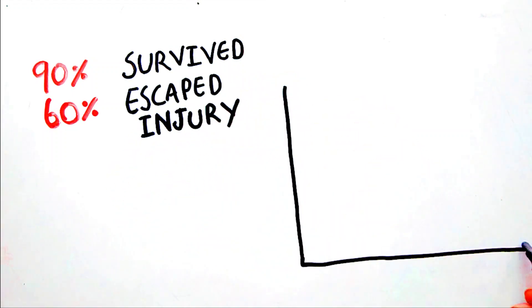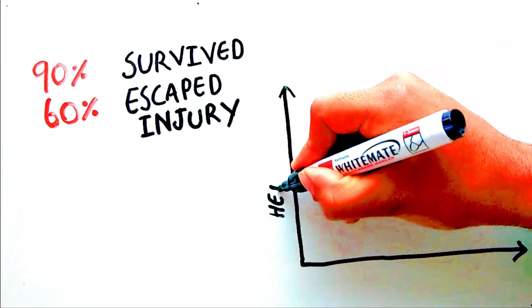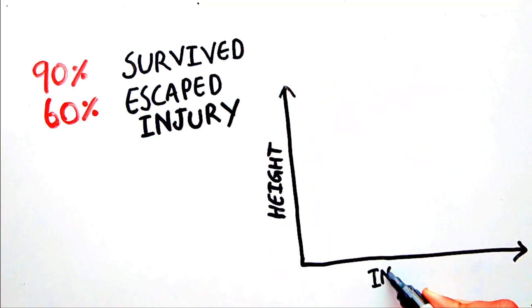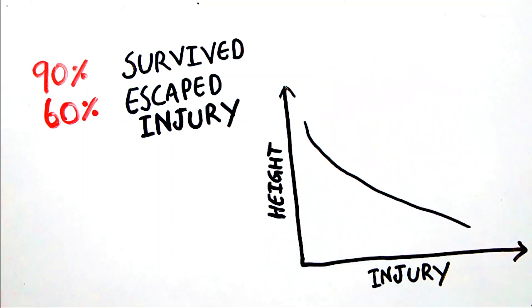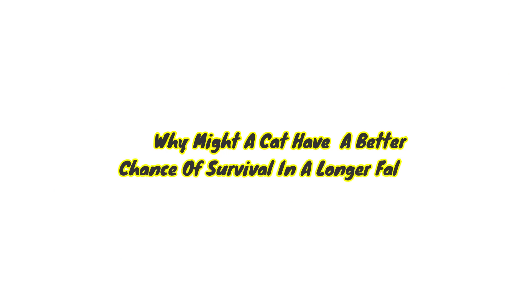Strangely, the extent of injury or the certainty of death decreased with height if the fall was more than 7 or 8 floors. Why might a cat have a better chance of survival in a longer fall?